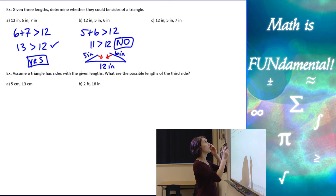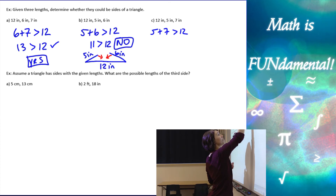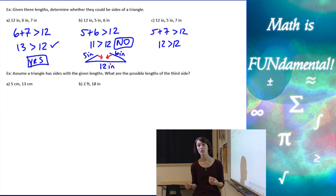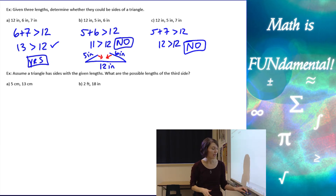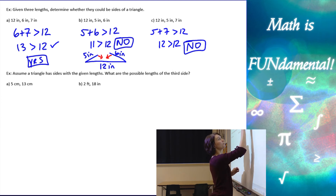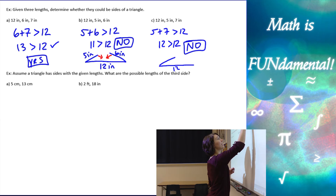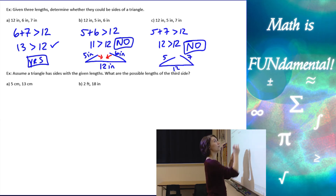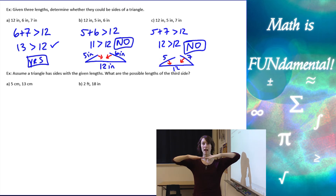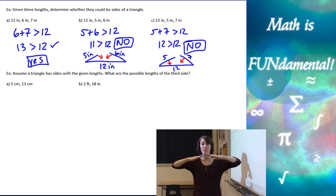Last one: what happens with five plus seven and twelve? Is twelve greater than twelve? Will the sides meet if the two smaller sides add up equal to the third side? Unfortunately, they won't — so this is also a no. Visually, if the bottom side is twelve, and the other sides are five and seven, they'll only meet when they're completely horizontal — but that doesn't create a triangle. As soon as you lift them up, they separate, so equal lengths don't form a triangle either.